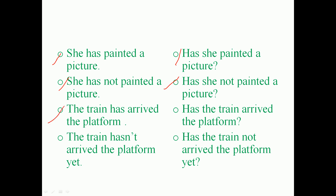'The train has arrived at the platform.' Question: 'Has the train arrived at the platform?' Negative: 'The train hasn't arrived at the platform.' Question of negative: 'Has the train not arrived at the platform?' This is the way of using present perfect tense while asking questions. I hope you are clear.